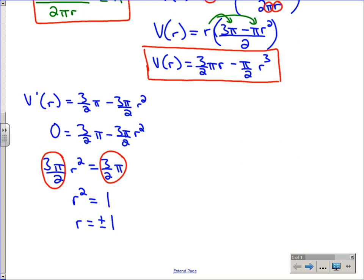Those are the two solutions to the derivative equation. But the context was that r actually represented the radius of a circle, so r equals negative 1 is inadmissible—it doesn't make any sense. Therefore, r equals 1 will give us the maximum.